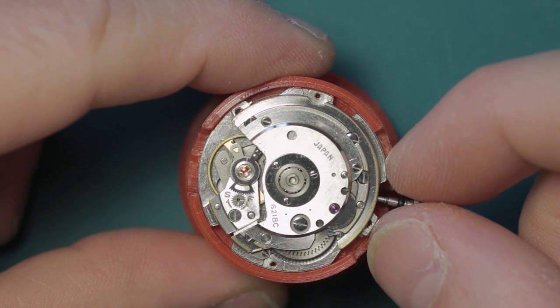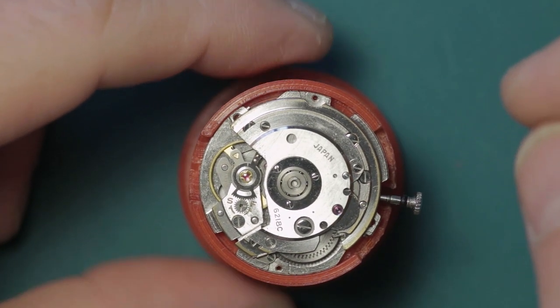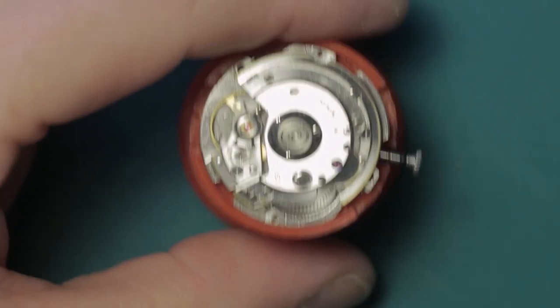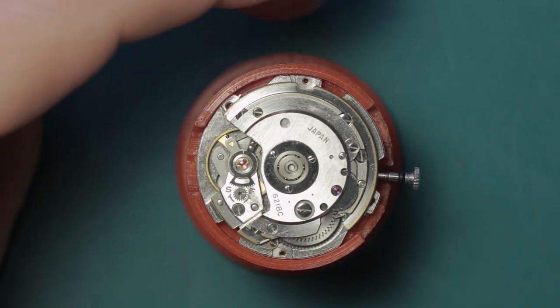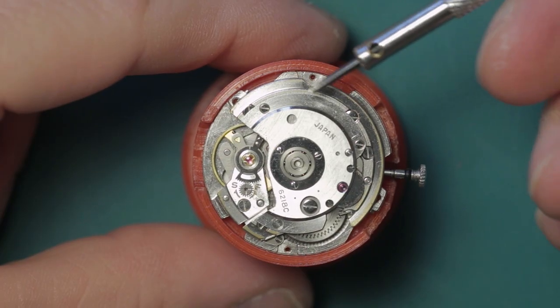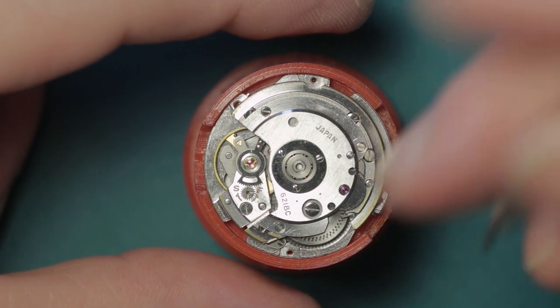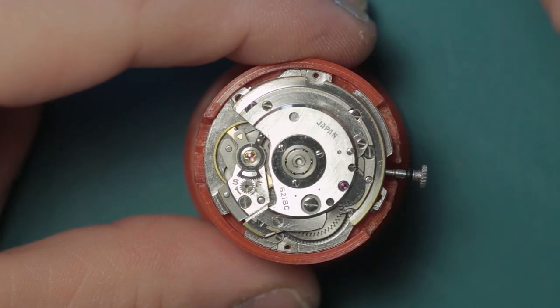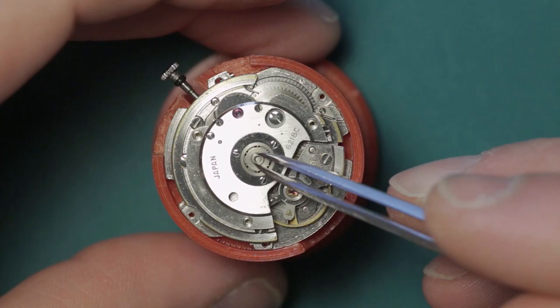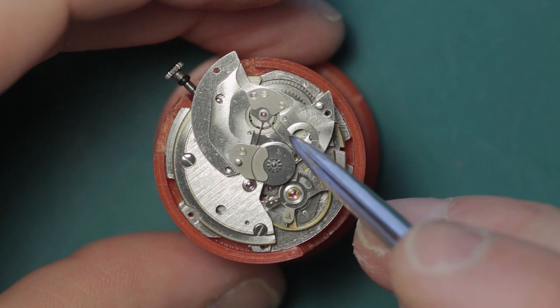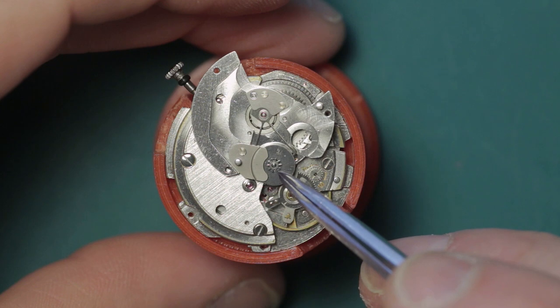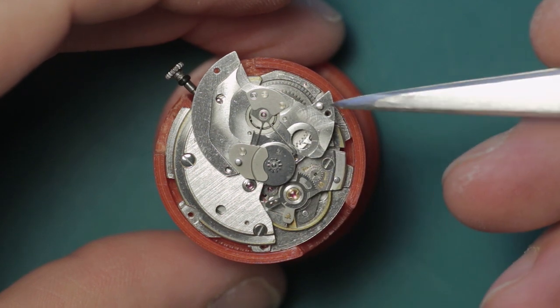What I'm going to do first of all is remove the balance and the automatic works before I start on the keyless works, which is something I typically do with any automatic watch. Get the automatic works out of the way first. The auto winding bridge is held with three screws. This will be further stripped down later by removing these two plates that retain the pole levers and the reduction wheel.